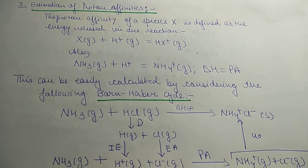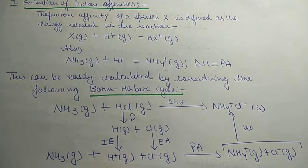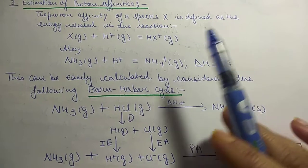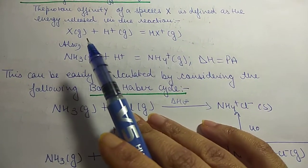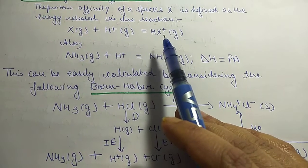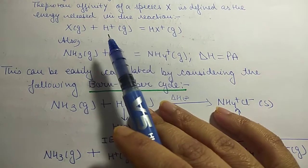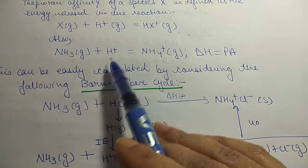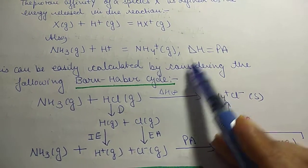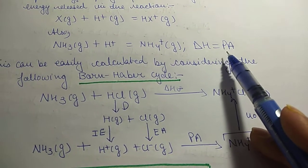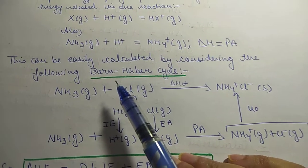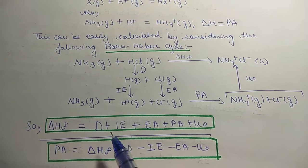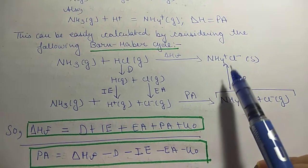The proton affinity of a species X is defined as the energy released in the reaction: X plus H⁺ gives HX. So proton affinity is the energy associated with addition of a proton. For example, for ammonia, when H⁺ is added, the ΔH of that reaction is the proton affinity. This proton affinity can be calculated easily by considering the Born-Haber cycle for the formation of ammonium chloride.